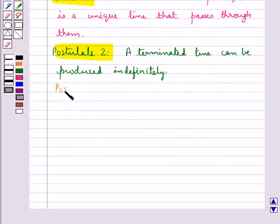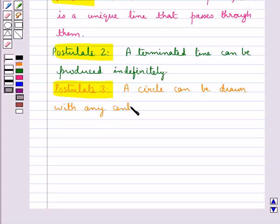Postulate 3 says that a circle can be drawn with any centre and any radius.